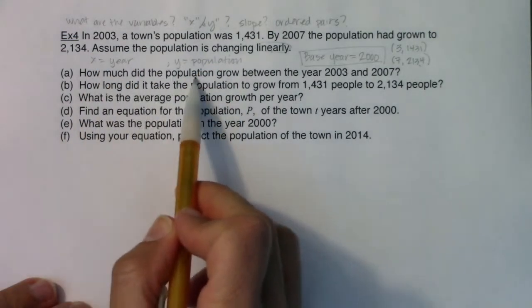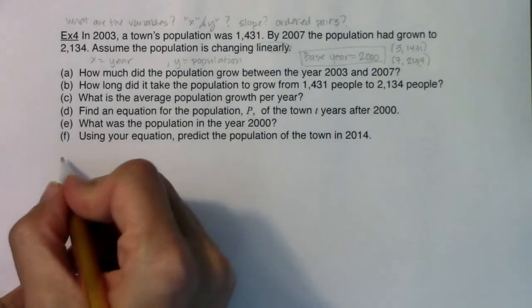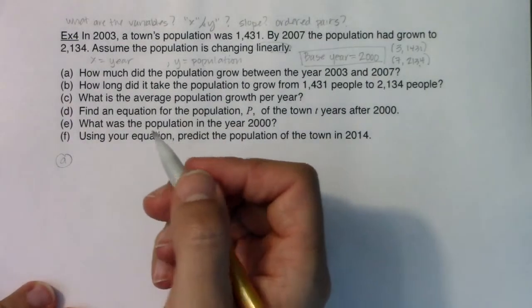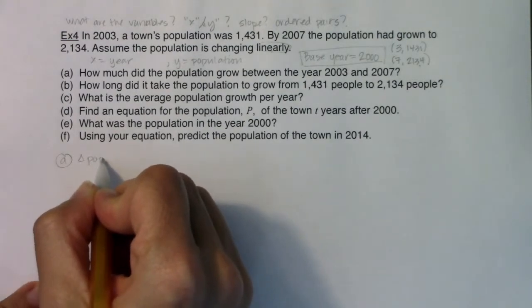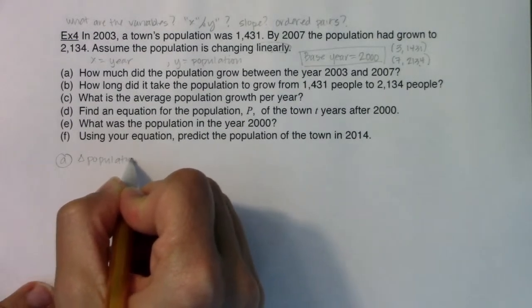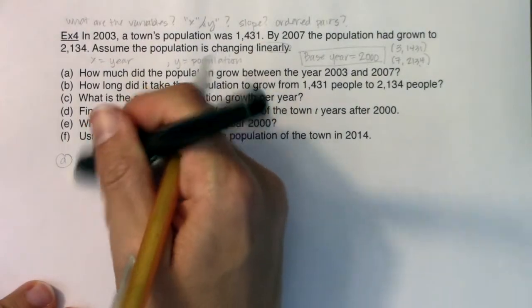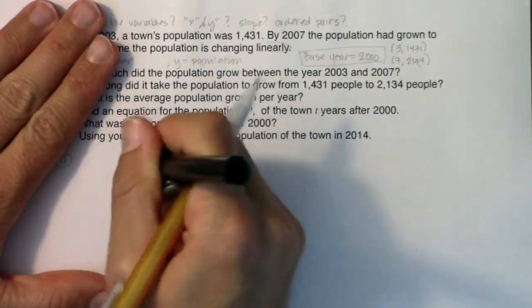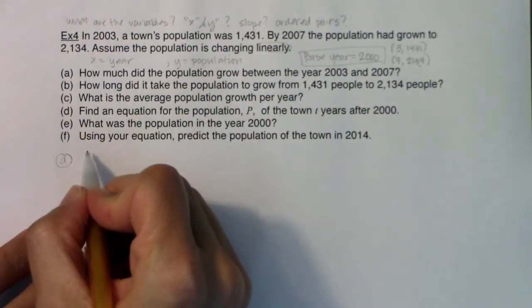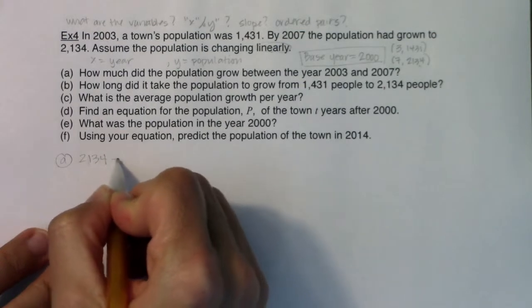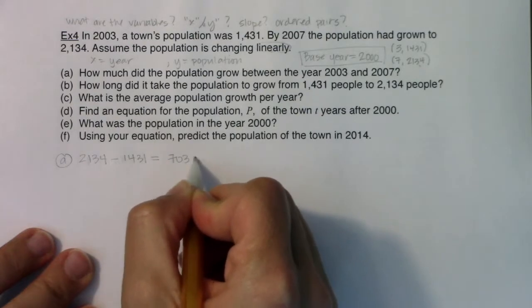Let's see what they're asking. How much did the population grow between the years 2007 and 2003? For part A, I just want to find the change in the population, which I could call delta population. This usually means change in. But we have the change in population. It looks like it ended at 2,134 and it started at 1,431, so my change is 703 people.